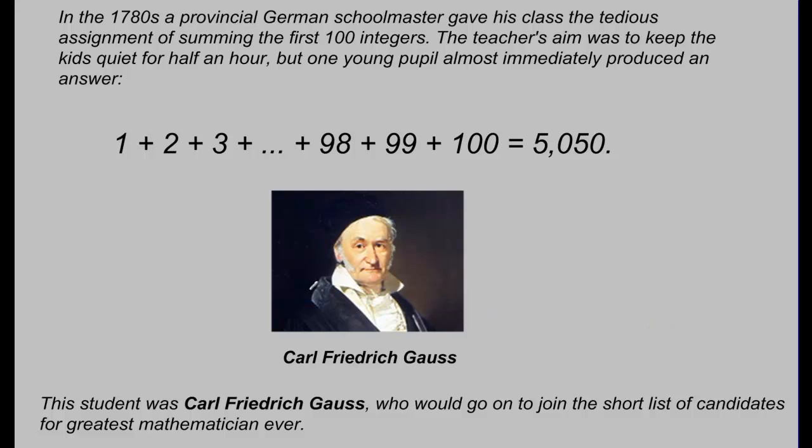Before we get a little bit ahead of ourselves, let's first note that 1 plus 2 plus 3 all the way to 100, we call this a series. It's very similar to a sequence, but a sequence is separated by commas, whereas a series is separated by plus signs. Essentially, we're saying, take the sum of a sequence, and we call that a series.